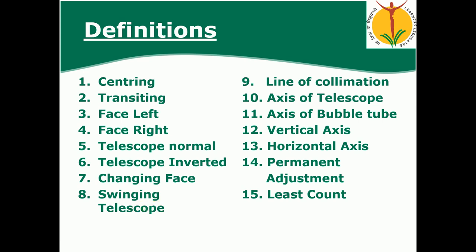Swinging of telescope means rotating the telescope about the horizontal axis. Rotating inward about the horizontal axis is called swinging the telescope.